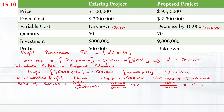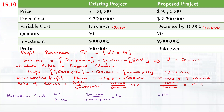We will find the break-even point. Break-even point equals fixed cost divided by price minus variable cost. For the existing product, fixed cost is $2,000,000 divided by $100,000 price minus $50,000 variable cost. So break-even point is 40 units. For the proposed product, fixed cost is $2,500,000 divided by price $95,000 minus variable cost $40,000, and the answer is 45 units.